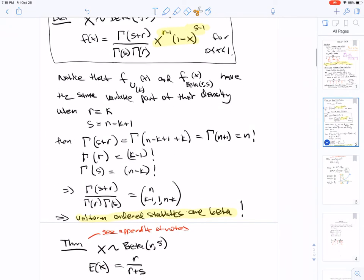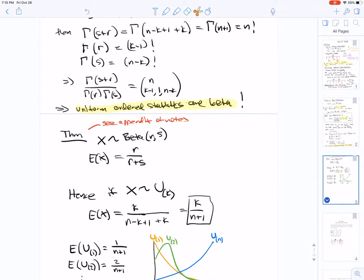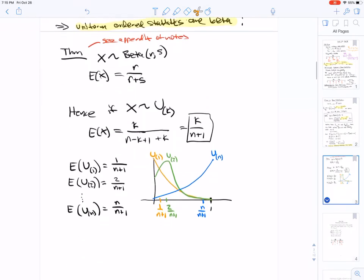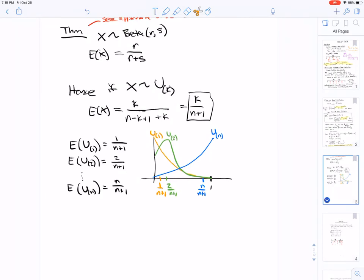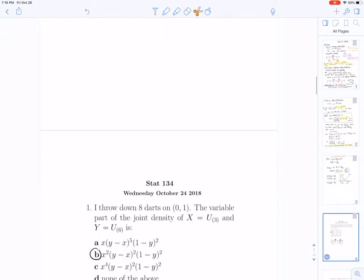The uniform order statistics are beta. In the appendix at the end of these notes, I show that if X is beta(r,s) then the expectation of X is r over r plus s. Take a look at that, it's pretty straightforward. In particular, if X is the kth order statistic, then the expectation of X is k over n plus 1. It really makes sense that these order statistics are sort of a wave moving from left to right. The expectation is one over n plus one, then two over n plus one, all the way to n over n plus one.